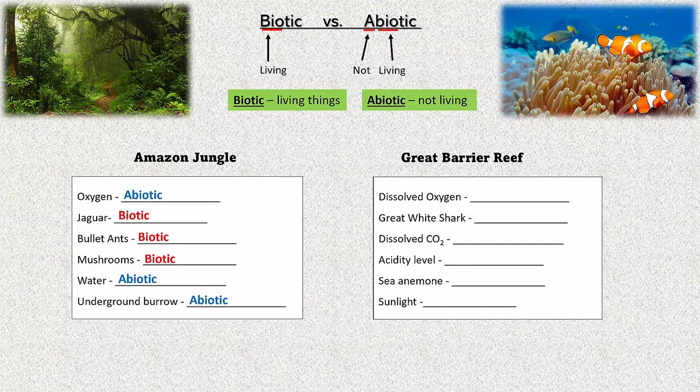Dissolved oxygen in the Great Barrier Reef — yes, there's dissolved oxygen in water — non-living. Great white shark — living. Dissolved CO2, acidity level, the pH — both not living. Sea anemone, the thing in the upper right with the tentacles — biotic. And sunlight — abiotic.